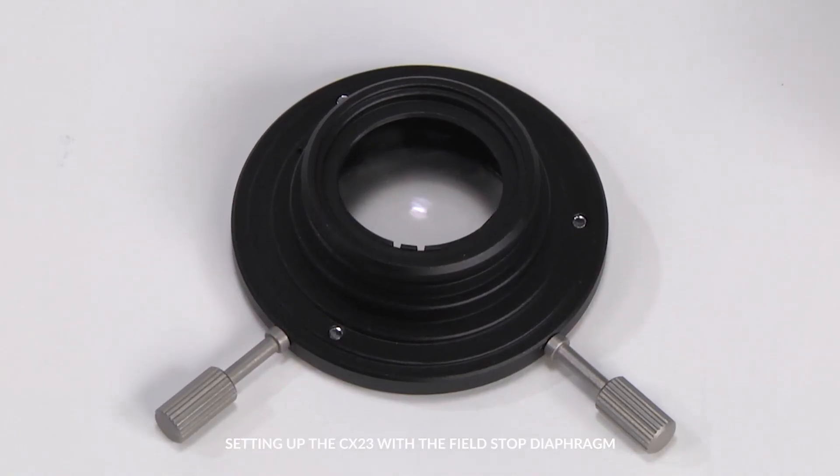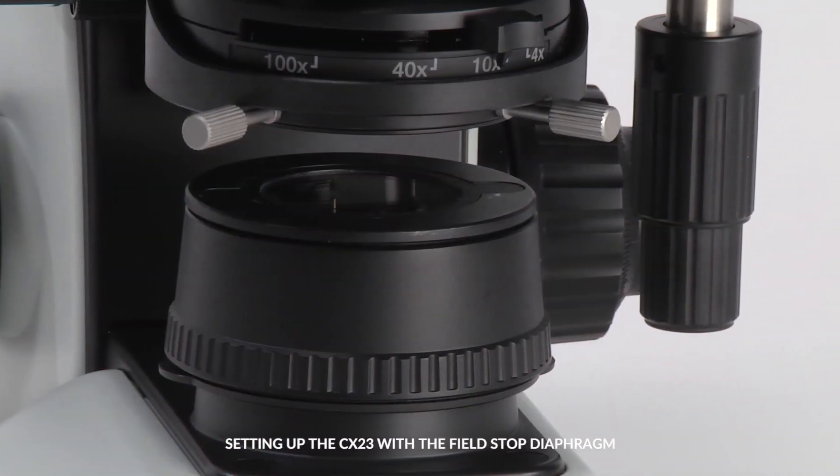Ensure that both centering knobs of the auxiliary lens unit match with the notch on the condenser.